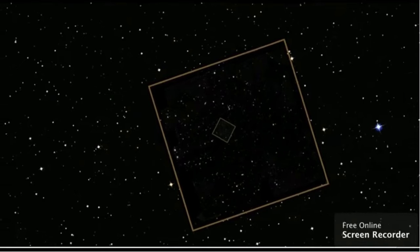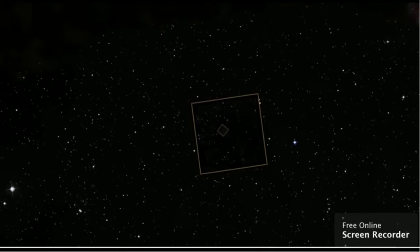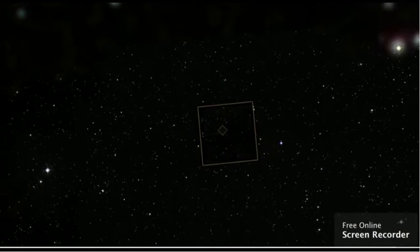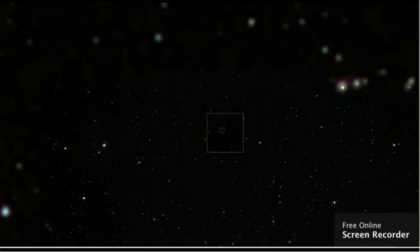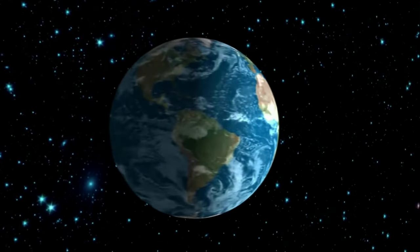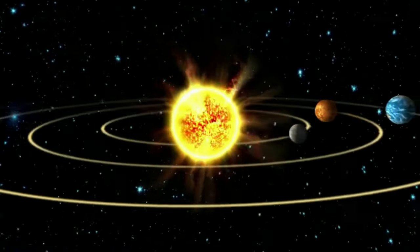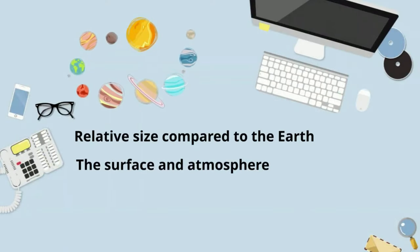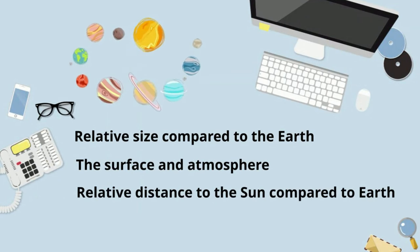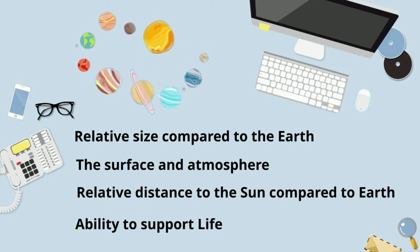So there we go — what you will find in a solar system, a galaxy, and the Universe. Let's take a look at the eight planets, their relative size compared to the Earth, their surface and atmosphere, their relative distance from the Sun compared to the Earth, and their ability to support life.